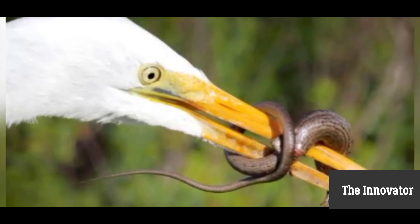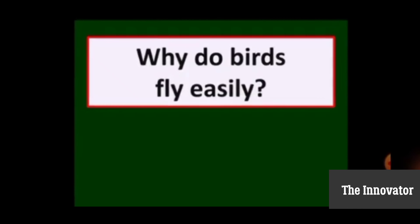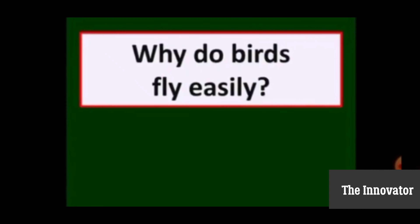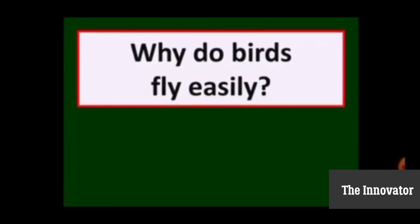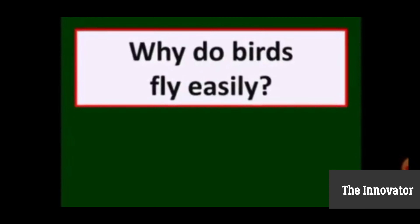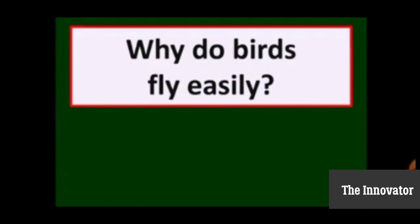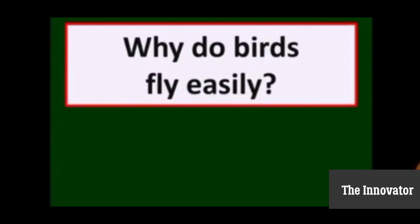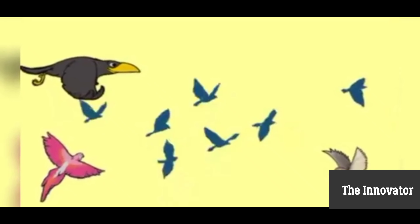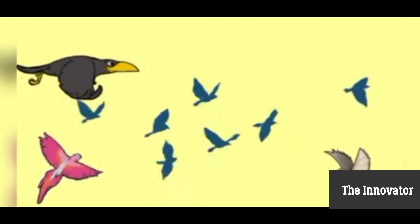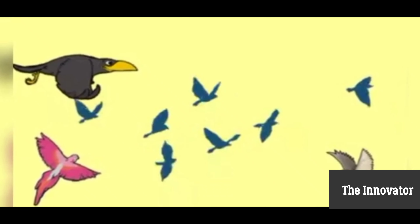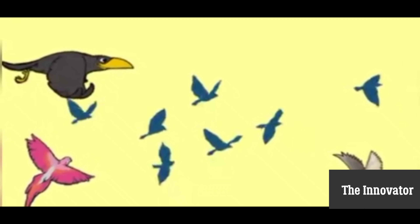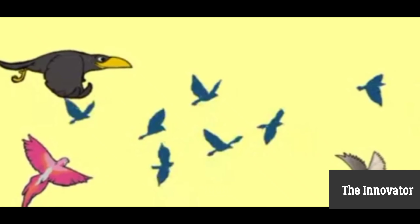And a bird has a hard beak. Now, an interesting question — why do birds fly easily? Jaisa ki aap jantay hai, birds ke paas feathers hootay hai, aur strong muscles hootay hai. Inhii muscles aur feathers ki combination se aapne wings ko flap kerti hai, aur asanhi se ura paati hai.